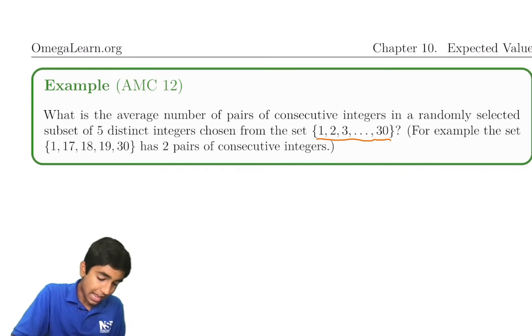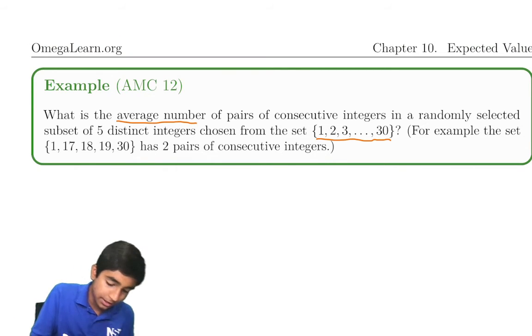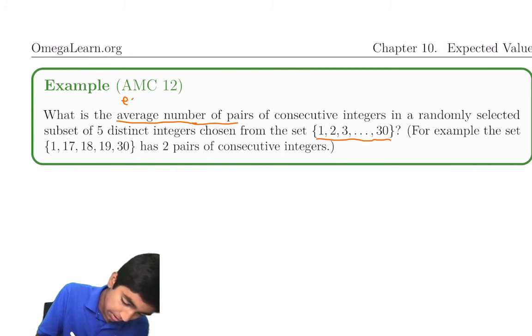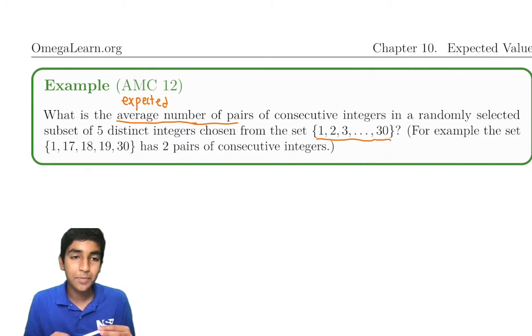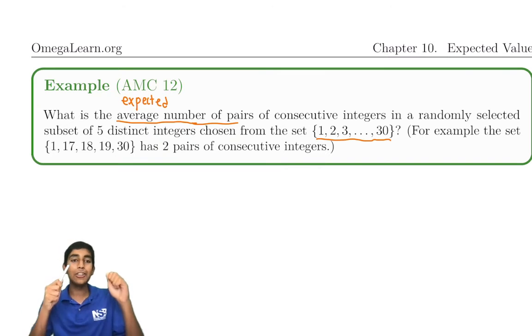Remember, here it says average number of pairs, but that's the same thing as expected number of pairs. They're the same. They're just different words. So what are the expected number of pairs when we choose five integers? Now, try to think of how we can use linearity of expectation.